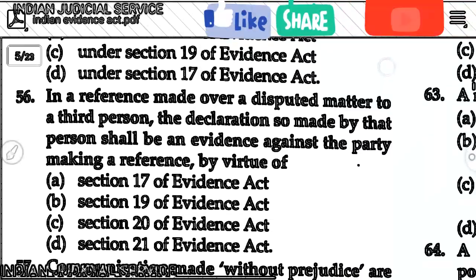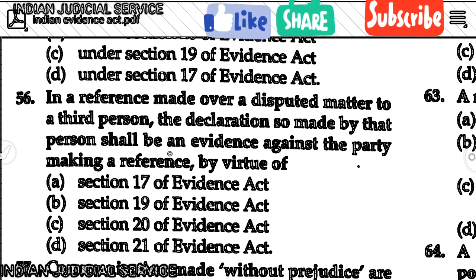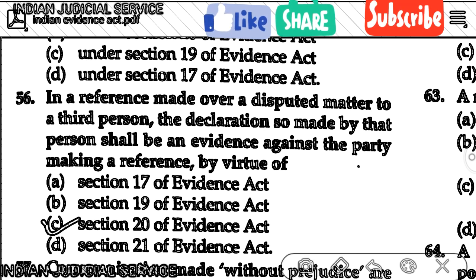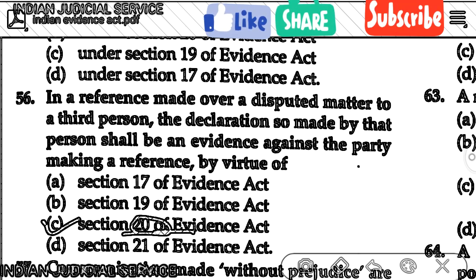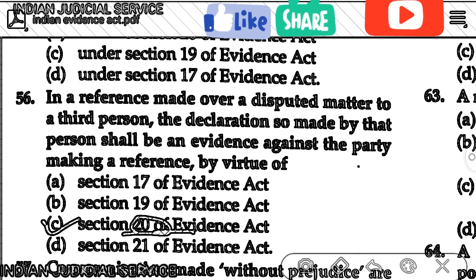Question number 56: In a reference made over a disputed matter to a third person, the declaration made by that person shall be evidence against the party making the reference. The answer is Section 20, option C. Section 20 is very important — it deals with admission by a person expressly referred to by a party to the suit. The key term here is 'expressly referred person,' who is the third person.